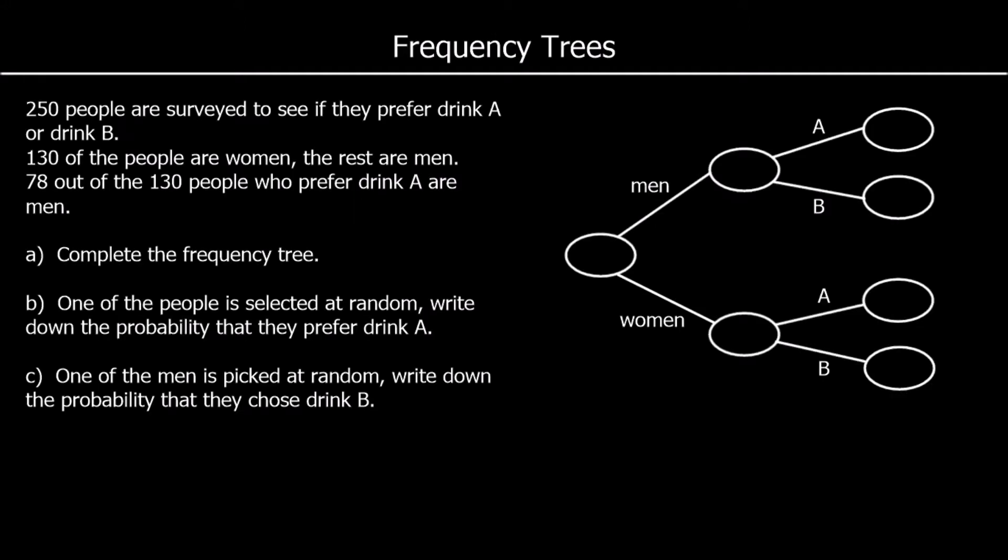So Frequency Trees. Frequency Trees are a way of displaying information that can be split into groups. Here we have a question that says 250 people are surveyed to see if they prefer Drink A or Drink B. So we're starting with 250 people. 130 are women, the rest are men.